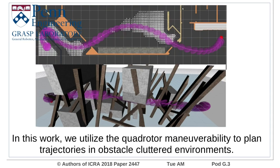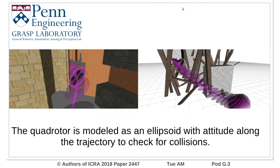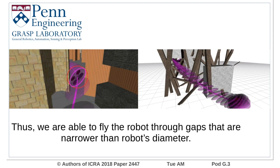In this work, we utilize the quadrotor's maneuverability to plan trajectories in obstacle-cluttered environments. The quadrotor is modeled as an ellipsoid with attitude along the trajectory to check for collisions. Thus, we are able to fly the robot through gaps that are narrower than the robot's diameter.